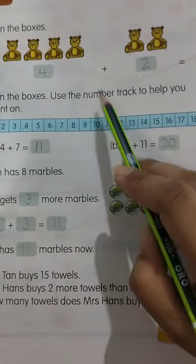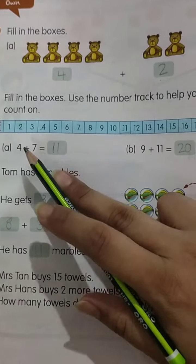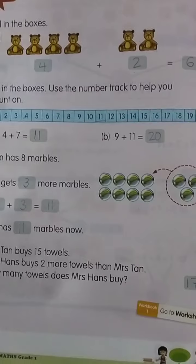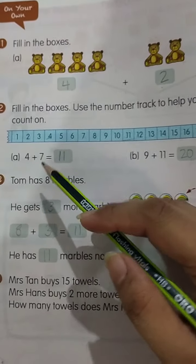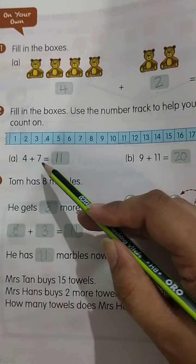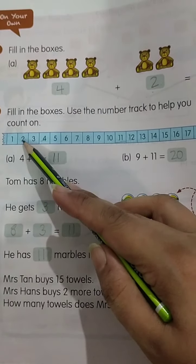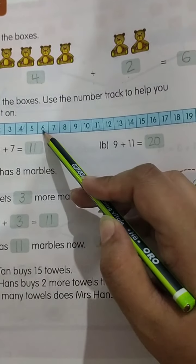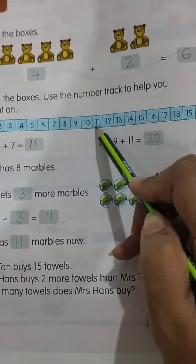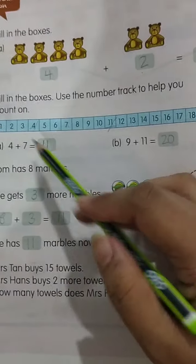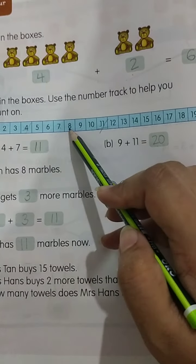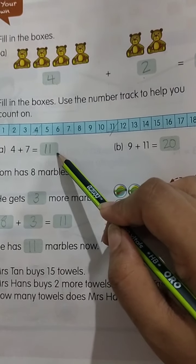Fill in the boxes, use the number track to help you count on. یہ انہوں نے number track دیا ہوا ہے. انہوں نے بتایا ہے کہ اس کی help سے آپ counting میں آپ کو آسانی ہوگی. اس کے مدد سے آپ اپنے questions fill کر سکتے ہیں. 4 plus 7 is equal to 11. یہاں آپ نے لکھ لیا 4. آگے آپ لوگ نے 7 count کرنا ہے. 1, 2, 3, 4, 5, 6, 7. اب اس کو total کو count کریں. 1, 2, 3, 4, 5, 6, 7, 8, 9, 10, 11. The answer will be 11.